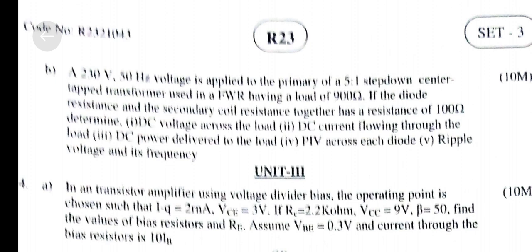B. A 230V, 50Hz voltage is applied to the primary of a 5:1 step-down center-tap transformer used in a Full Wave Rectifier having a load of 900 Ohms. If the diode resistance and the secondary coil resistance together have a resistance of 100 Ohms, determine: 1. Peak DC voltage across the load. 2. DC current flowing through the load. 3. DC power delivered to the load. 4. PIV across each diode. 5. Ripple Voltage and its Frequency.